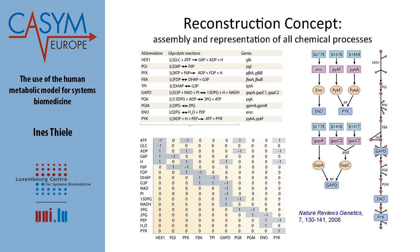Here's a slide showing the reconstruction concept for glycolysis. The first reaction of glycolysis—glucose plus ATP goes to glucose-6-phosphate, ADP, and a proton—is encoded by a particular gene. You can write down all 10 or 11 steps of glycolysis, listing the biochemical reactions that take place in, for example, E. coli.